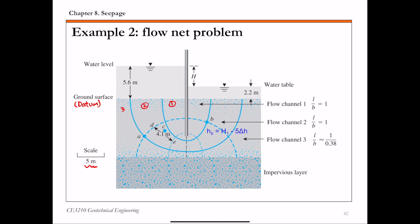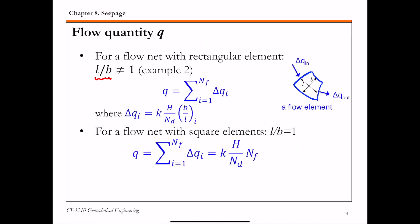For this flow net, we have three flow channels: one, two, and three. For each flow channel we have flow quantity delta q — delta q1, delta q2, and delta q3. The total flow quantity q is simply the sum of these flow quantities in each channel. If you have rectangular flow elements where l over b is not one, you have to calculate delta q for each flow channel and then add them up. Here, nf is the number of flow channels — in this example nf equals three.